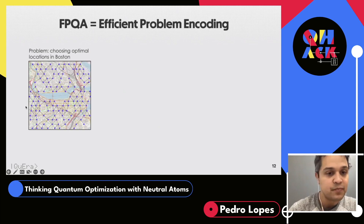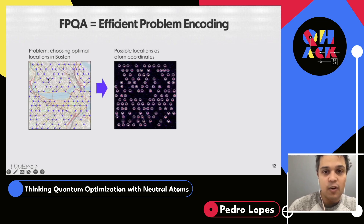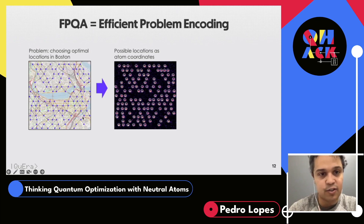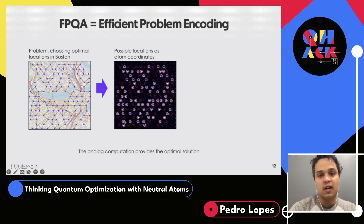The connections in the graph represent stores that would be competing with each other. For example, this store and this far-away store don't compete, so it's okay to place both. But if two stores are too close, they'd be competing for the same customers and maybe only one should be placed. What you can do with neutral atoms is literally create an atomic twin of this map — the individual rubidium atoms positioned exactly in the structure of the graph.